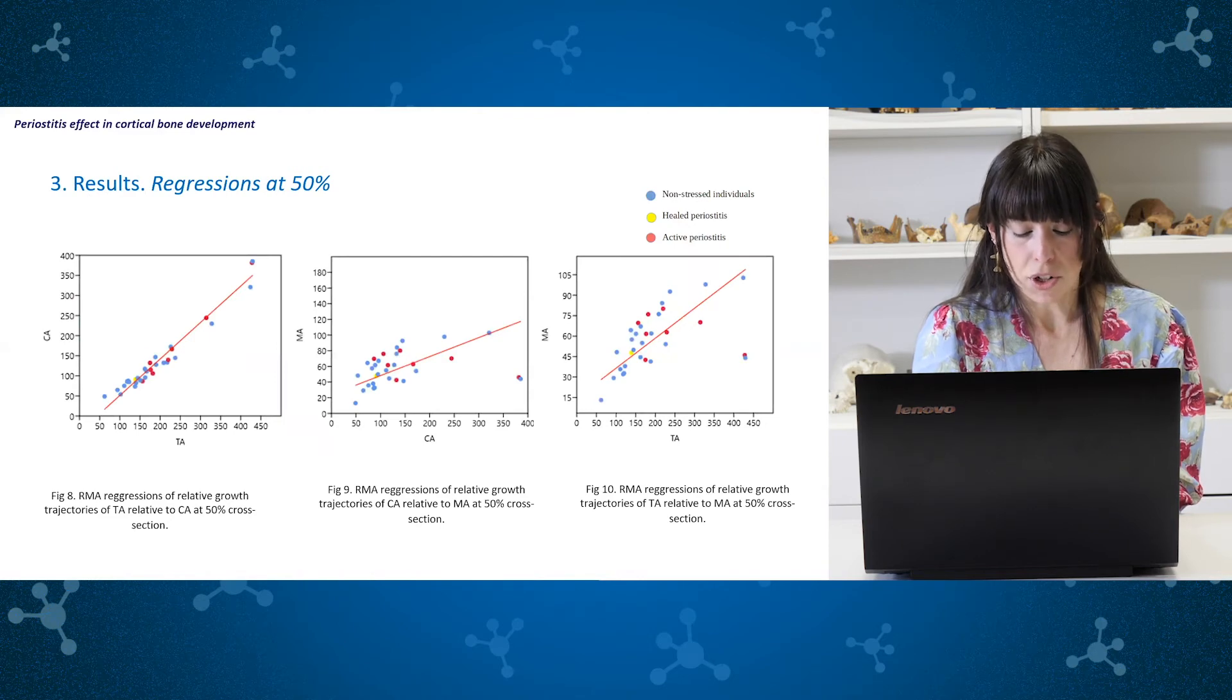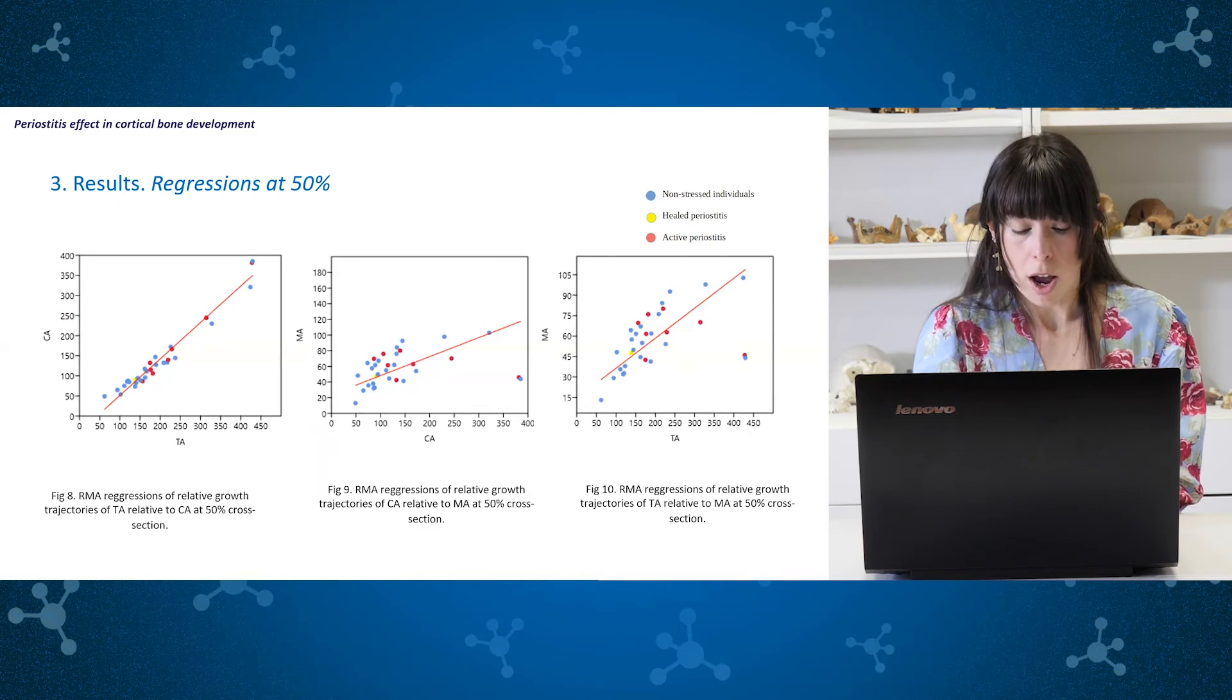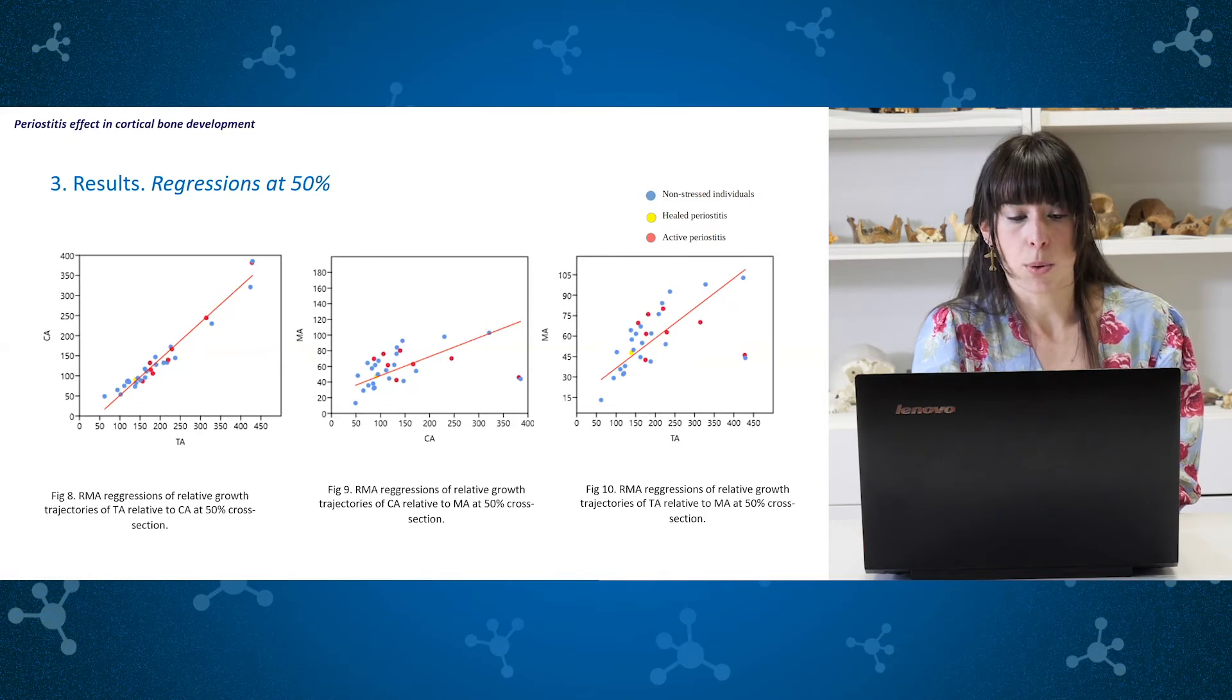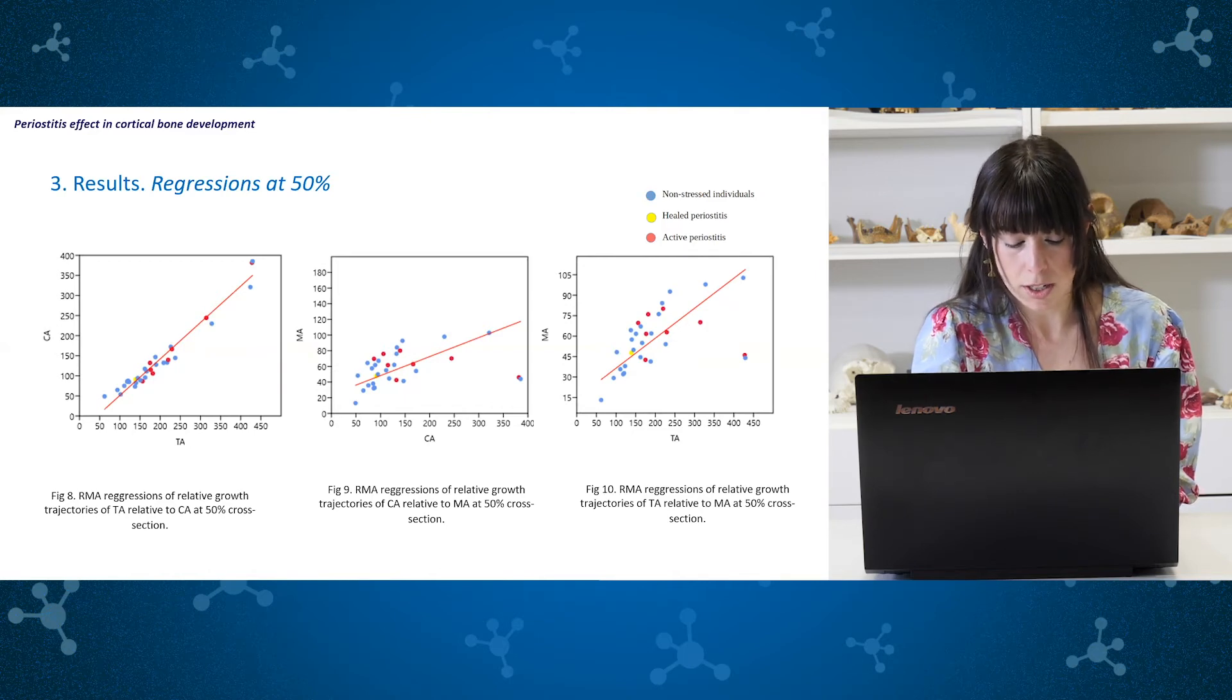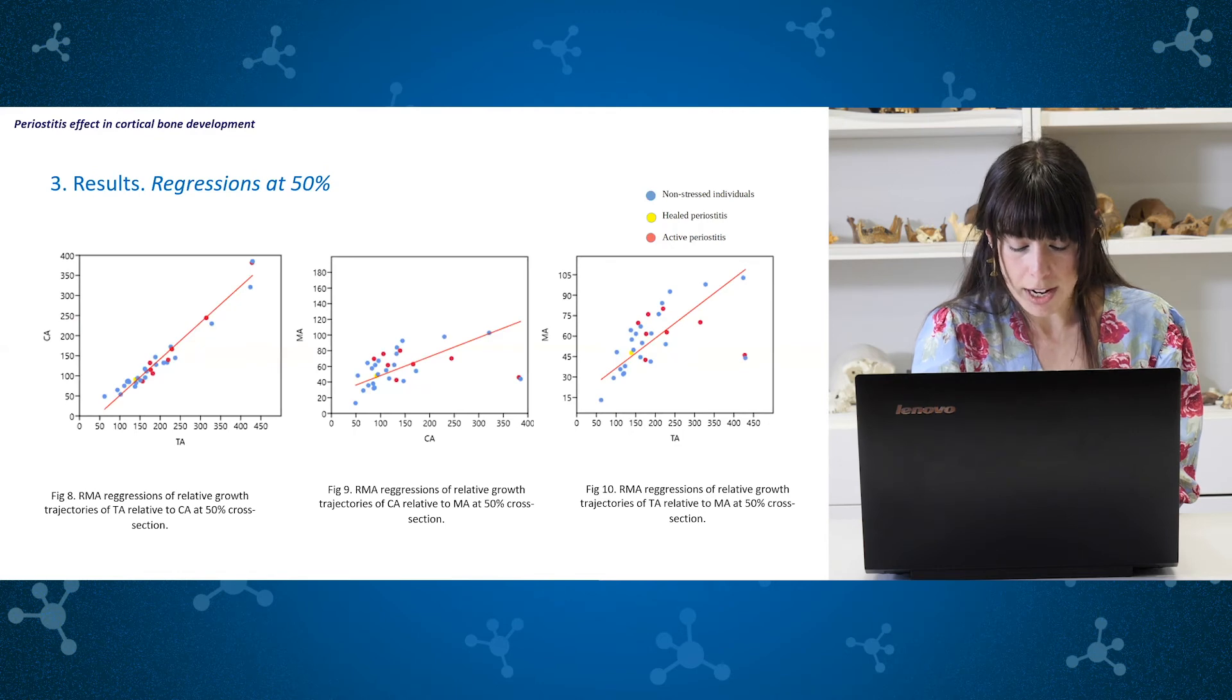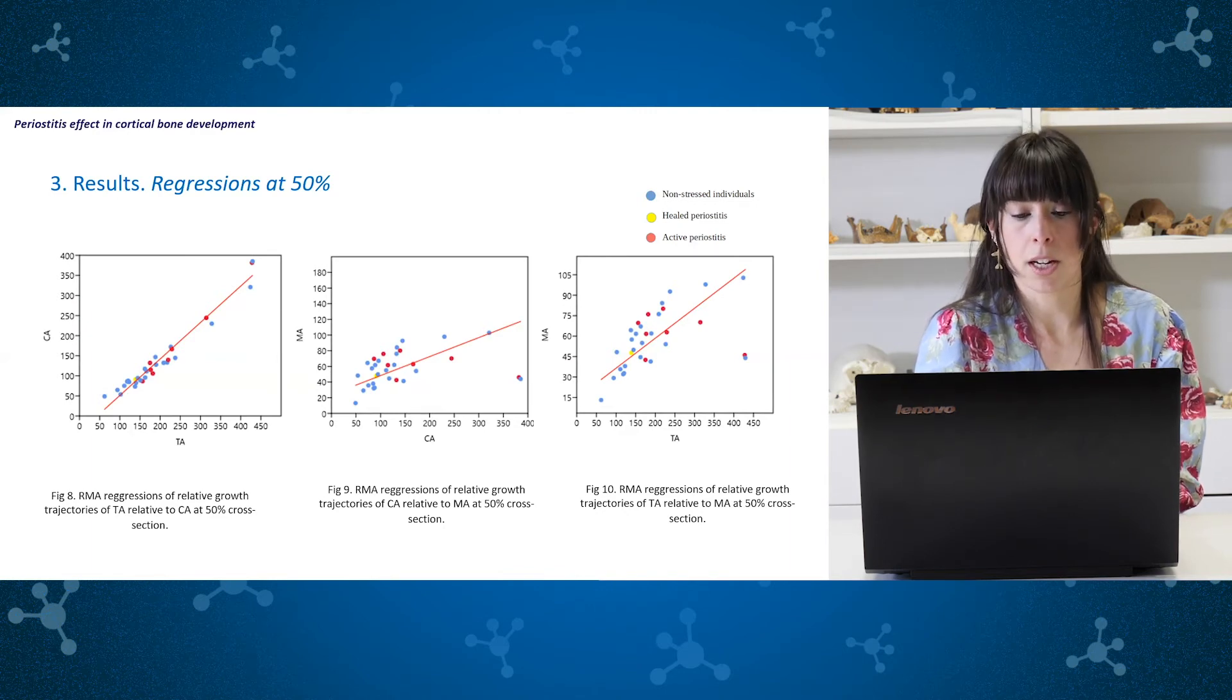Reduced major axis regressions of relative growth trajectories were tested. Individuals affected by periostitis are marked in red, healed or healing periostitis only one individual in yellow and blue points correspond to non-stressed individuals. We compared the standardized residuals for the relative growth trajectories, showing no statistical difference between healthy and stressed individuals in any of the relative growth trajectories. There are two obvious outliers in each graph that represents two individuals aged between 15 to 16 years old. It can be related the reduced medullary area compared to the cortical area and total area explained in that moment of growth in adolescence.